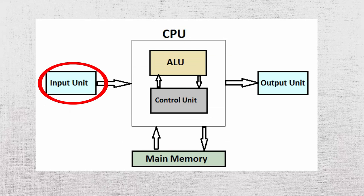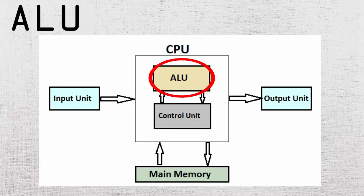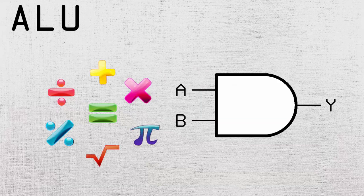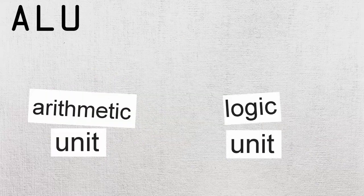The input is pretty self-explanatory and since I've covered it in nearly all my videos I won't be explaining it in this one. Next on the line is the ALU. The ALU stands for the arithmetic logic unit, and this is where the logical and arithmetic operations take place. In reality the ALU consists of two separate units: the arithmetic and logic unit.